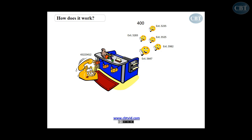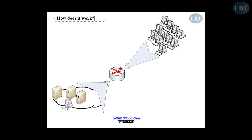If someone from the inside wants to call someone in the outside world, they go through the receptionist, who then dials that person's number on the public network. That is how a local telephone network communicates with the outside world — and that is how NAT works. Imagine we have 400 computers here, with a router, firewall, or computer in between, and the rest of the world — the internet — on the other side.